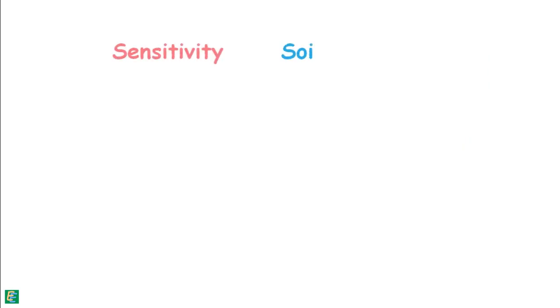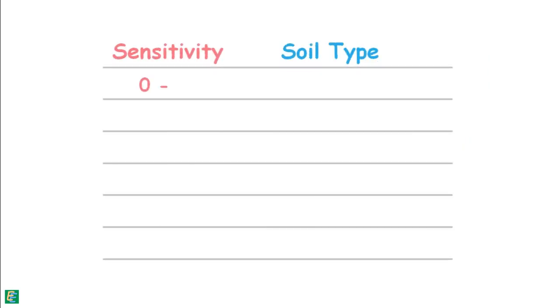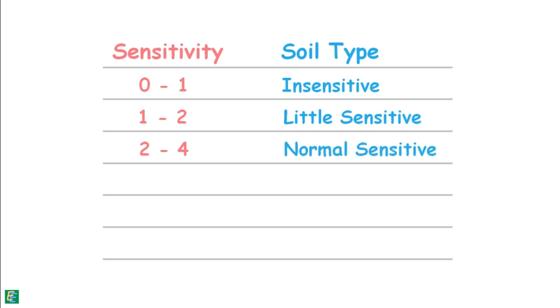Depending upon the sensitivity, soil may be divided into the following categories. When sensitivity of a soil is between 2 and 4, soil is moderately sensitive or normal sensitive.